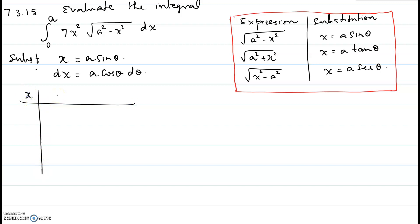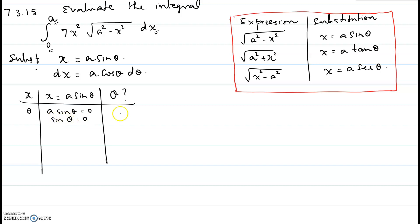Whenever you change the variable you have to also change the corresponding limits. The limits of x are 0 through a, so we have to find the new limits using x = a sin θ. For the lower limit x = 0: 0 = a sin θ, so sin θ = 0 and θ = 0. For the upper limit x = a: a = a sin θ, so sin θ = 1 and θ = π/2.